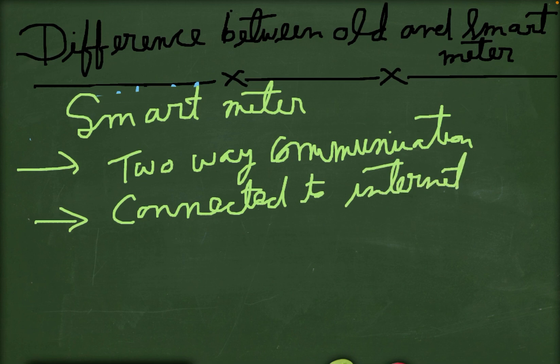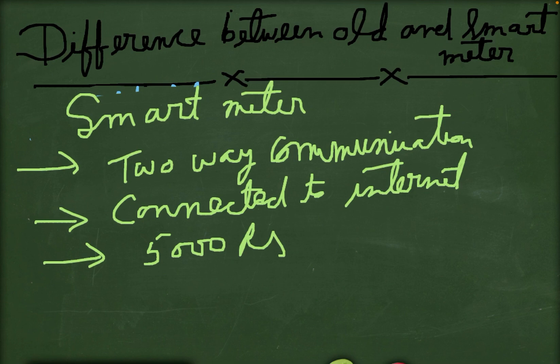The smart meter price is very high — approximately 5000 rupees — which is one of its demerits. The controlling chip is also available, and its controlling is very effective.